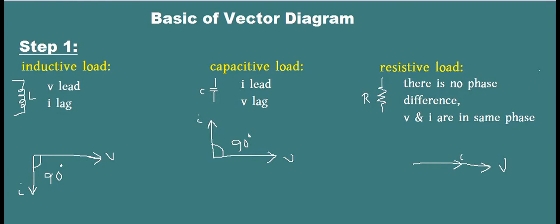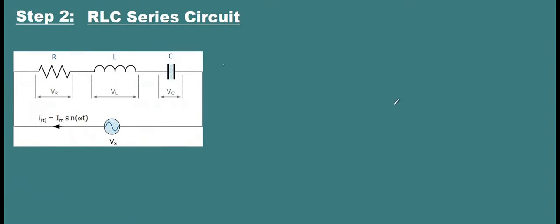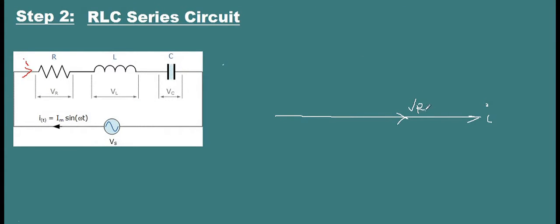Now let's combine all these things together. In Step 2, for an RLC series circuit, we take I as the reference value. The resultant voltage VS is equal to VR. VR will be in the same phase with I, and VL will lead I by 90 degrees because it is inductive. This is VL.